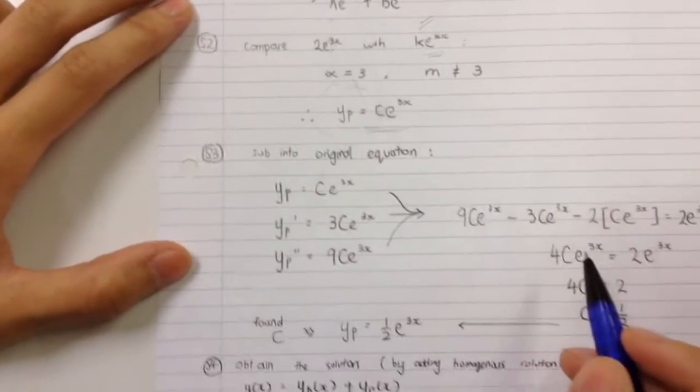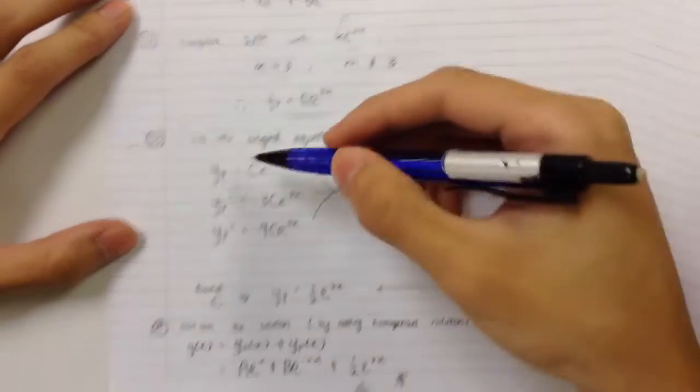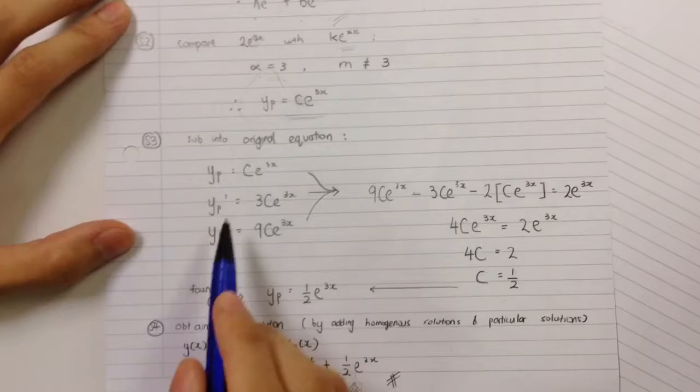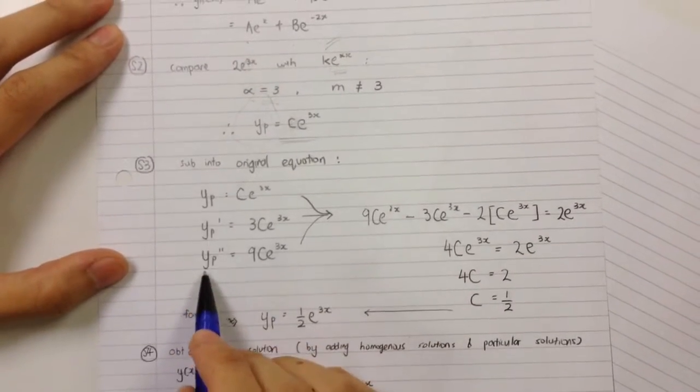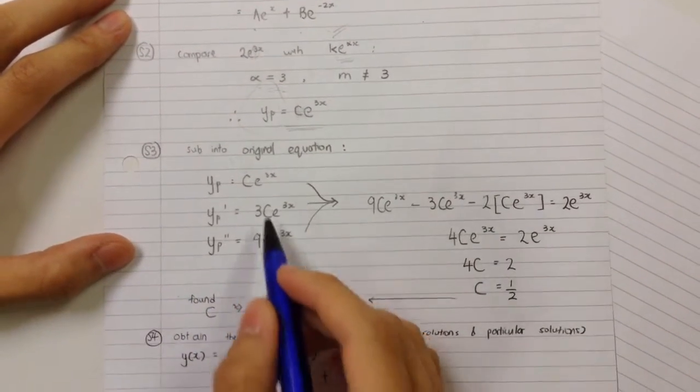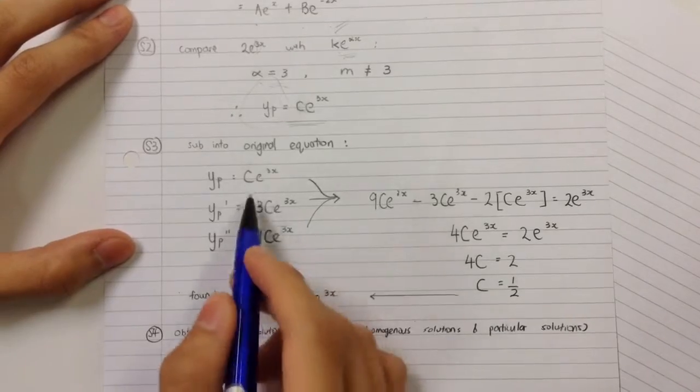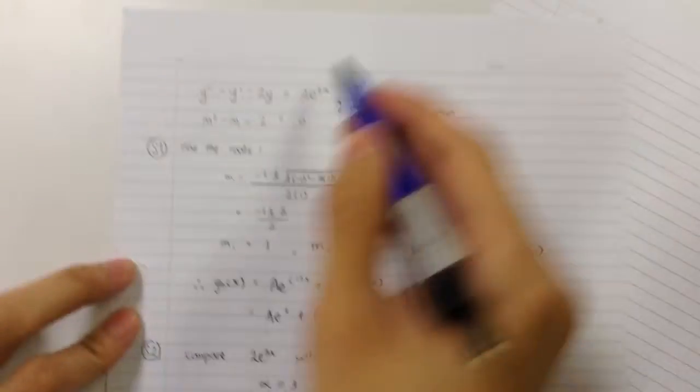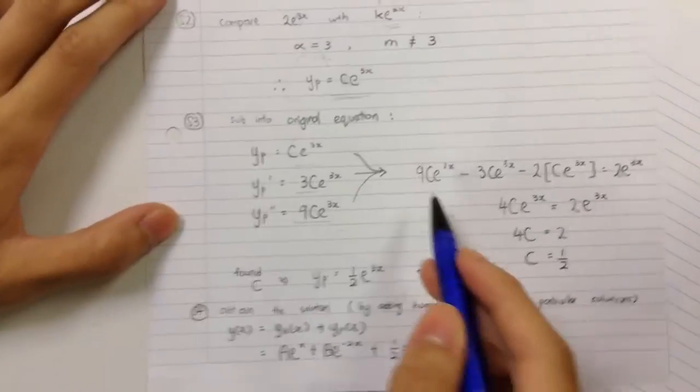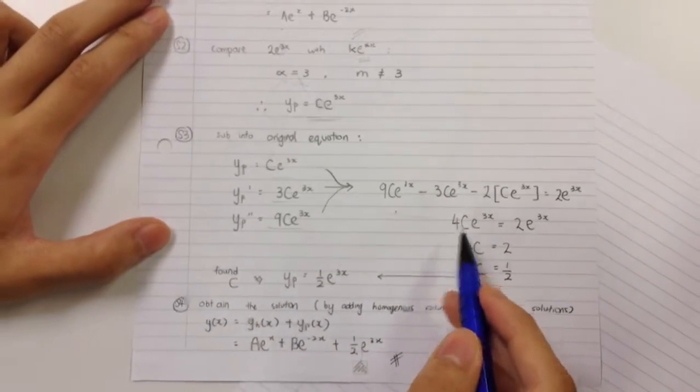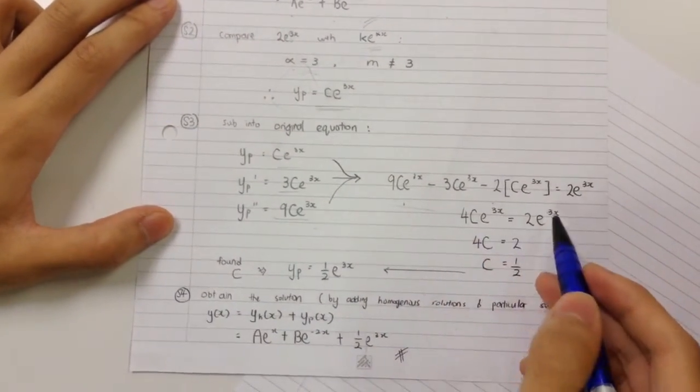I continue to step three and find Y' and Yp'. I find these three equations and substitute into the original equation up here, down here, until here.